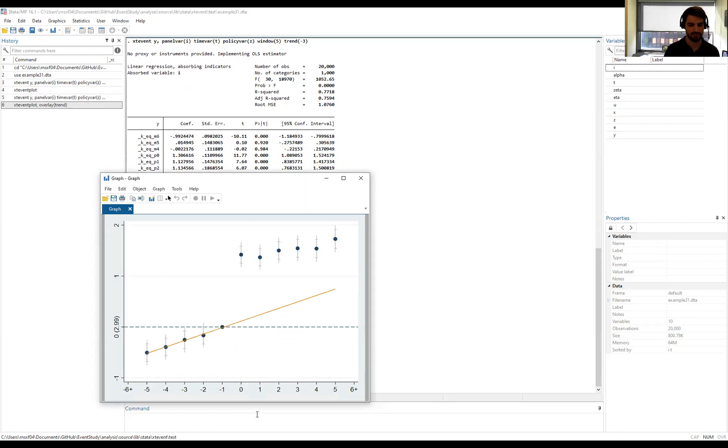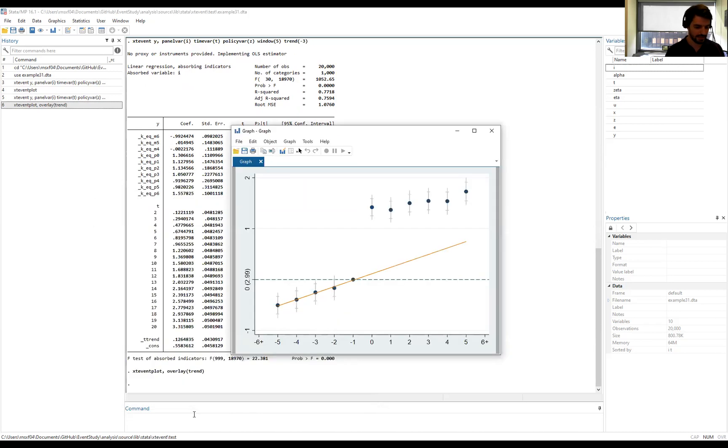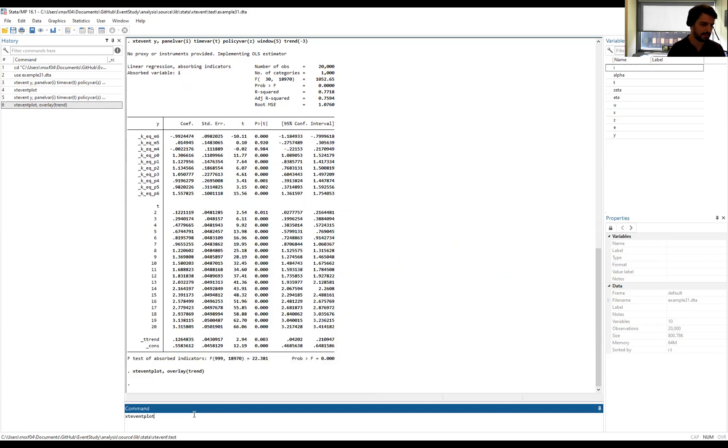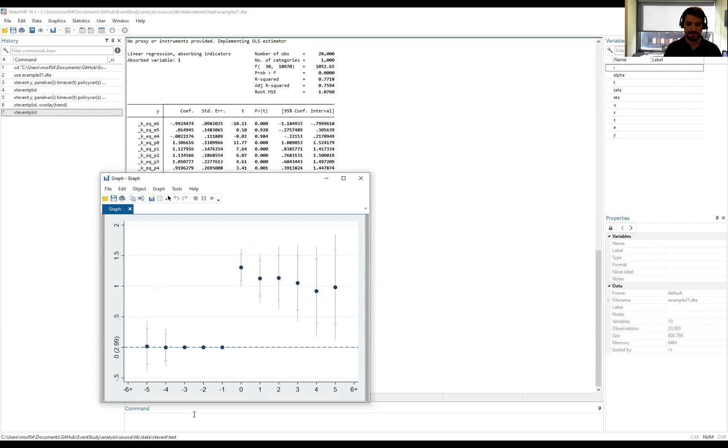Or we can directly subtract the linear extrapolated line from our point estimates to get an event study plot of our causal estimates. To do that, we simply type xtevent_plot. Thank you for watching this video and I hope you found it helpful for your research.